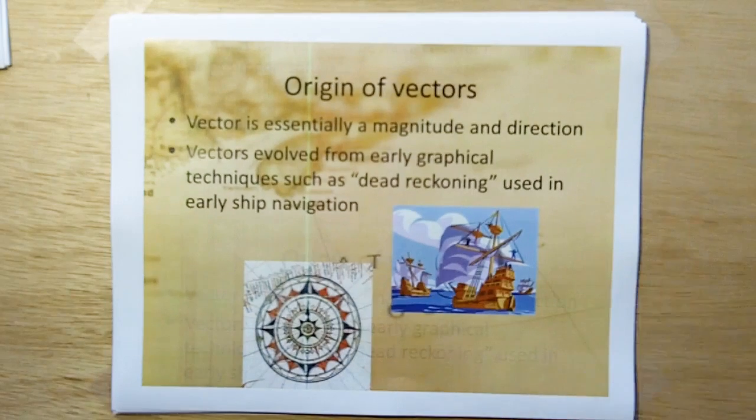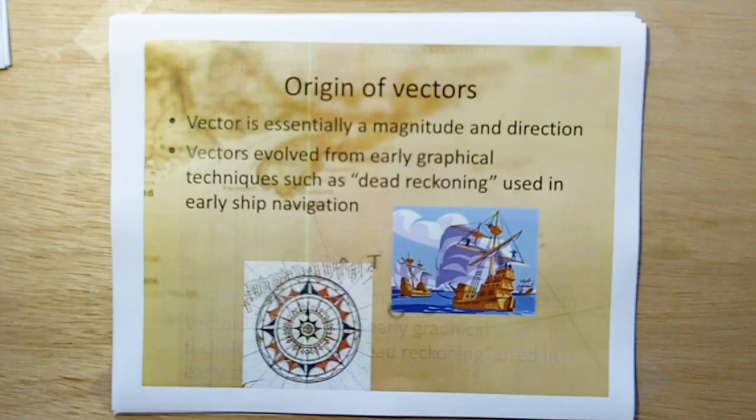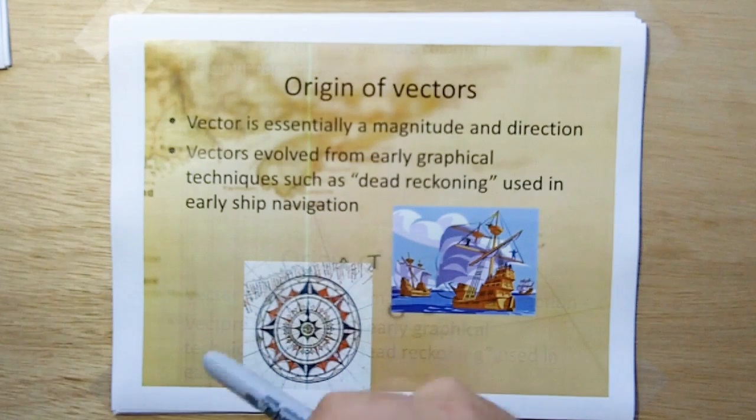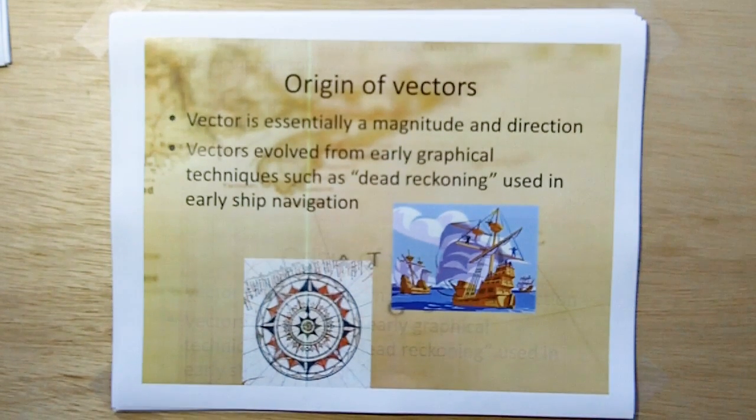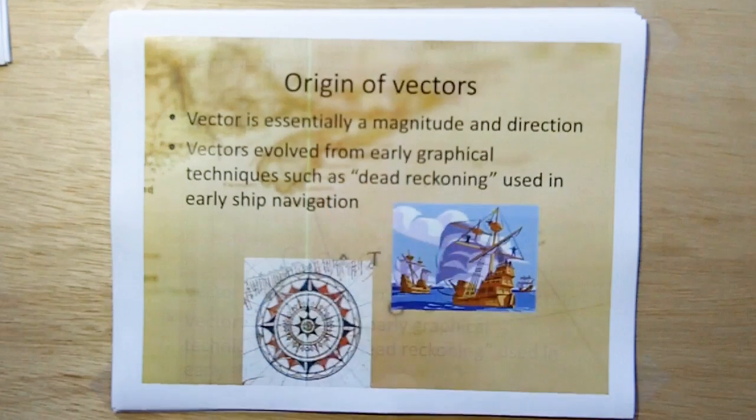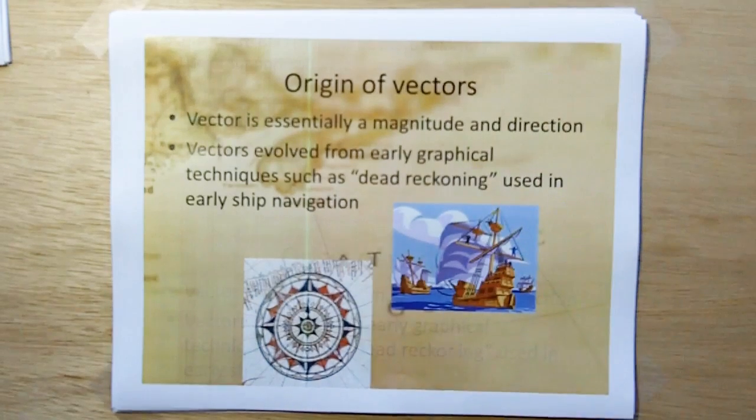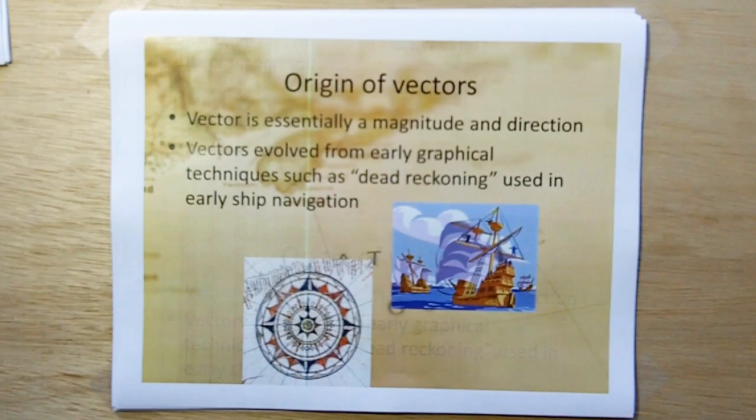A vector is essentially a magnitude and direction. We'll explain what that means in a moment. In this course, when we go on, I'm going to be expanding the definition of vectors a little bit. So magnitude and direction is how a vector started, but as this course goes on, we're going to expand that definition to include other things like apples and oranges, of all things.